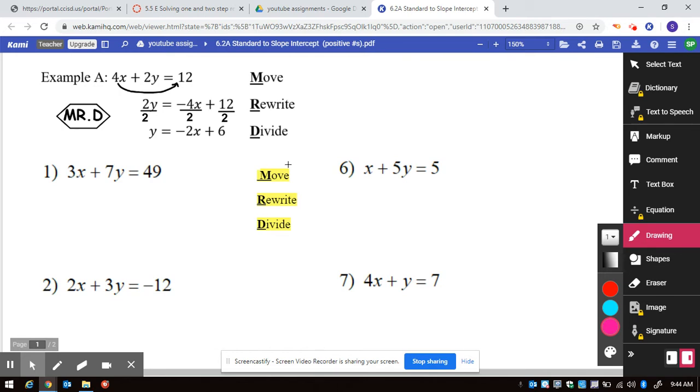So move means that you take this x and you move it to the opposite side with the opposite sign. So minus 3x.